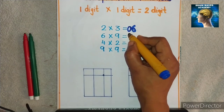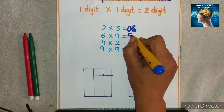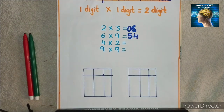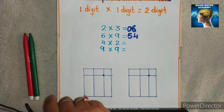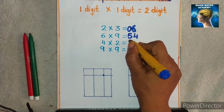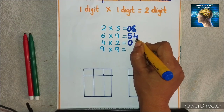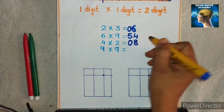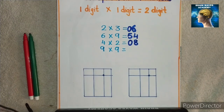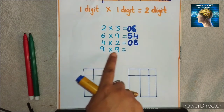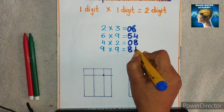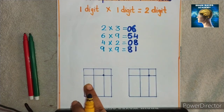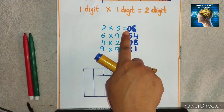Next example: 6 nines are 54 — that's already a double digit, so no need to prefix a zero. Next, 4 times 2 is 8 — single digit, so we prefix a zero to make it 08. That is the rule in abacus; you have to follow it very carefully. And 9 nines are 81 — 81 is already double digit, so no need to prefix a zero. This is how we handle 1D into 1D to always get a 2-digit answer.